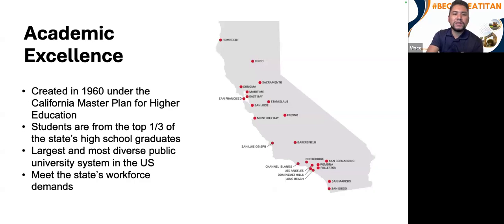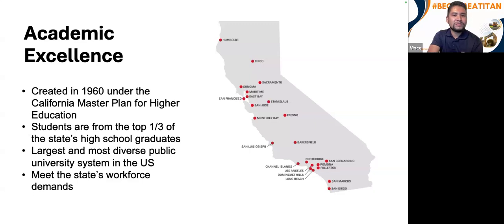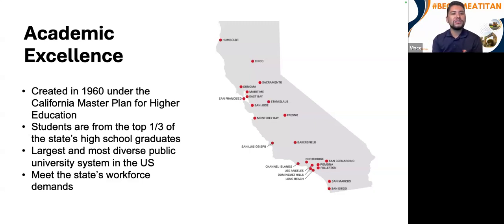We are all over California — all the way from up north in Humboldt to down south near San Diego. We have San Diego State, Cal State Fullerton in southern California, located next to Long Beach State and Cal Poly Pomona. Our system started based off of a master plan for higher education in 1960, and one-third of California's high school graduates attend our schools.